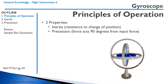The second property is gyroscopic precession. If you apply a force to the gyroscope, the force acts 90 degrees from the input force. Perhaps you've seen this when you've spun a bike wheel and tried to move it, and it feels like it's moving not quite as it's supposed to.